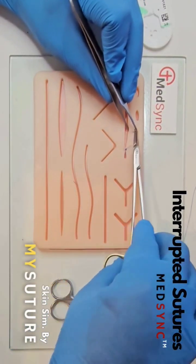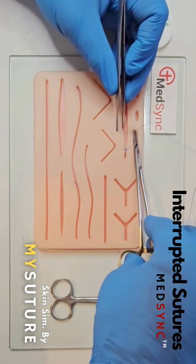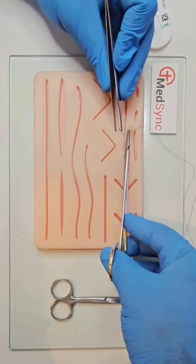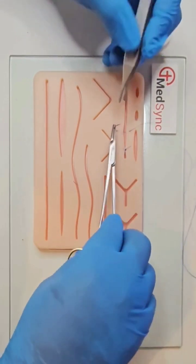Enter the skin at 90 degrees. The hand rotates from prone to supine. Stabilize the needle with the forceps. Retrieve the needle out of the skin with the needle holder.